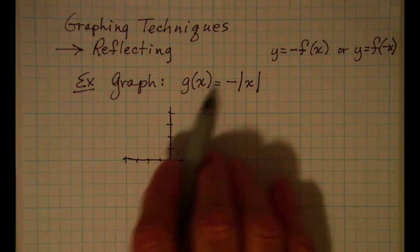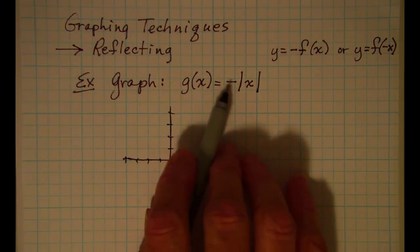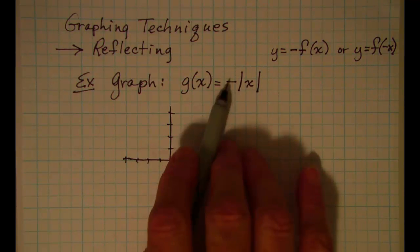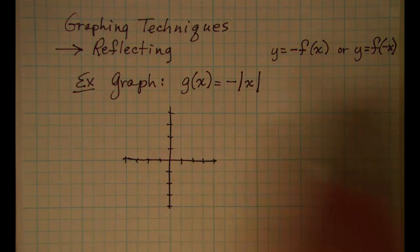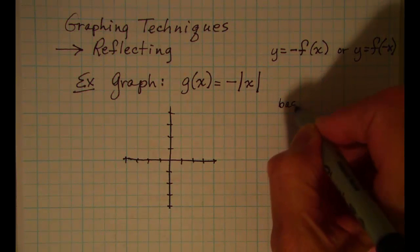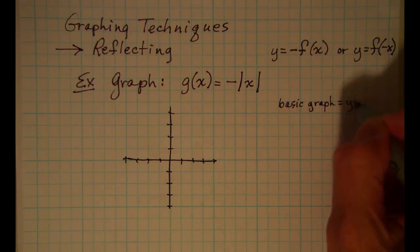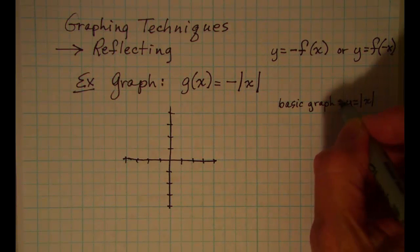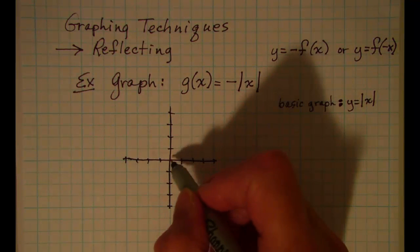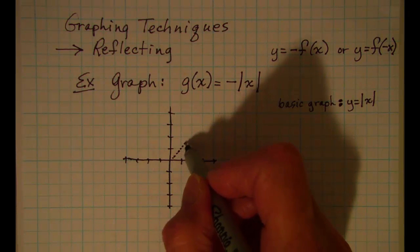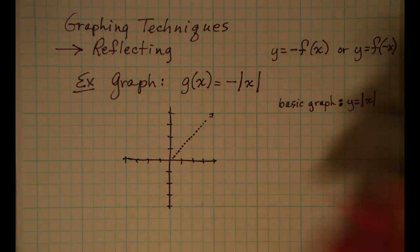In our first example we are asked to graph g(x) = -|x|. We are negating the y value here because our negative is out in front of the whole function. Our basic graph is y = |x|, so let me draw that in with a dotted line — the absolute value of x is the one that looks like a V.